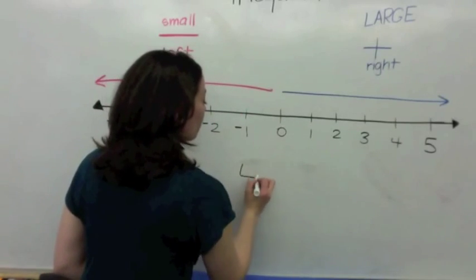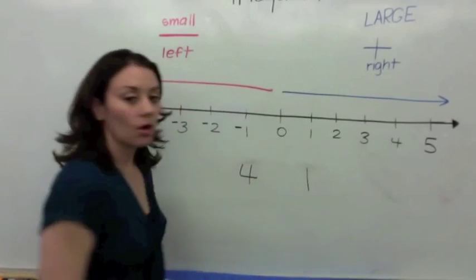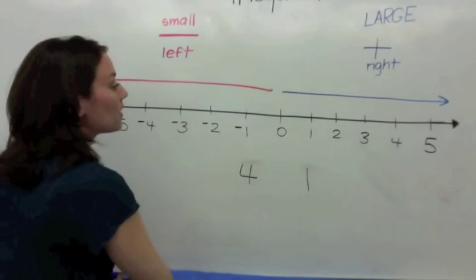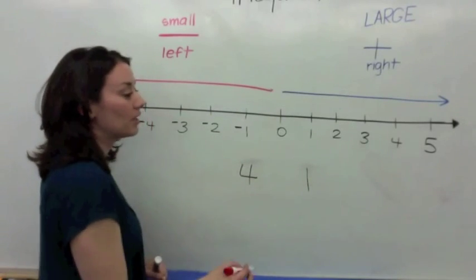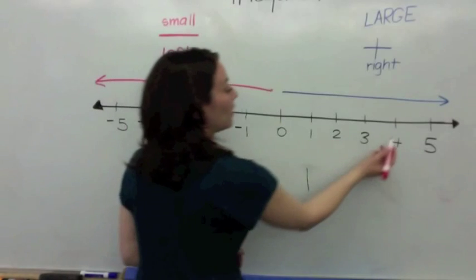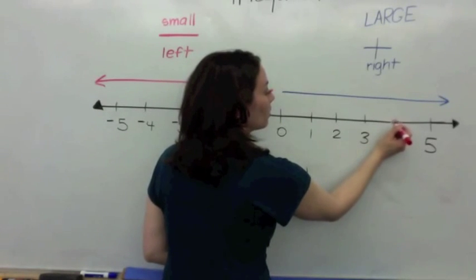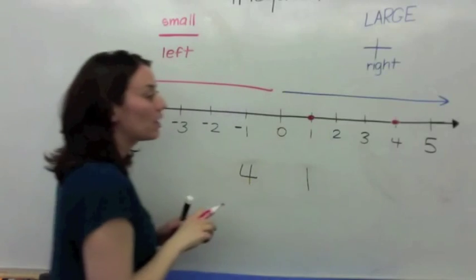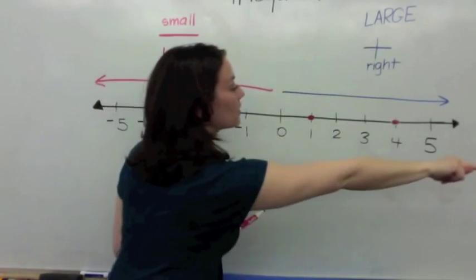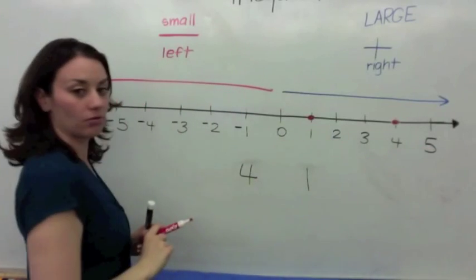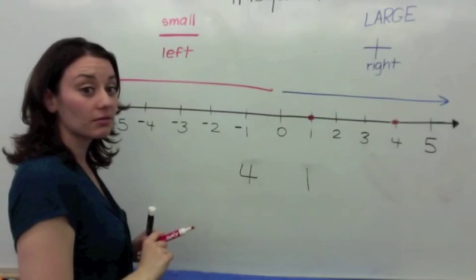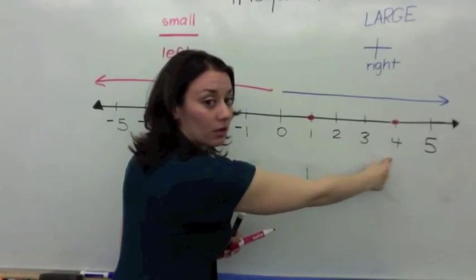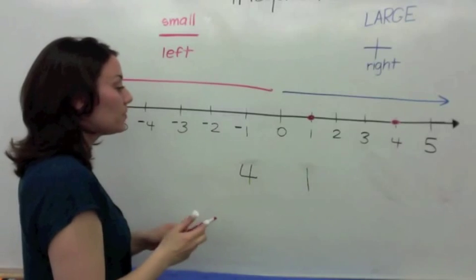Let's compare 4 and 1. Which number is bigger? Well, if you plot these points on the number line, you have 4 and you have 1. Which one is farthest from 0 — 1 or 4? 4. Good.